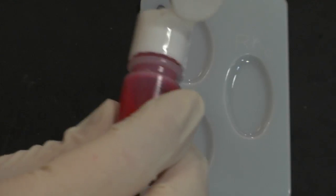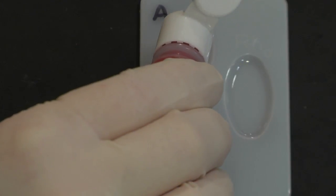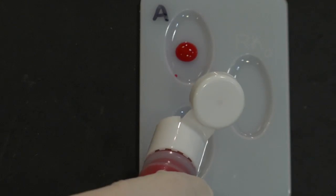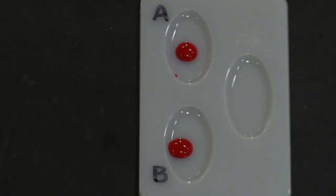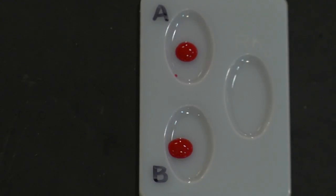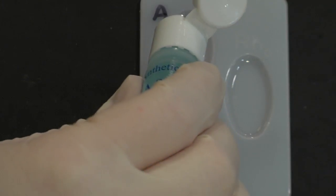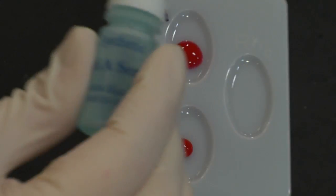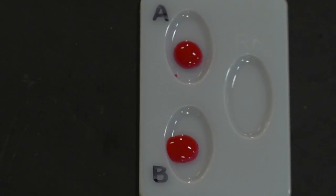I will start by placing one drop of the first blood sample in the well labeled A and one drop in the well labeled B. Next, I will place one drop of the anti-A serum into the well labeled A, and then one drop of the anti-B serum into the well labeled B.